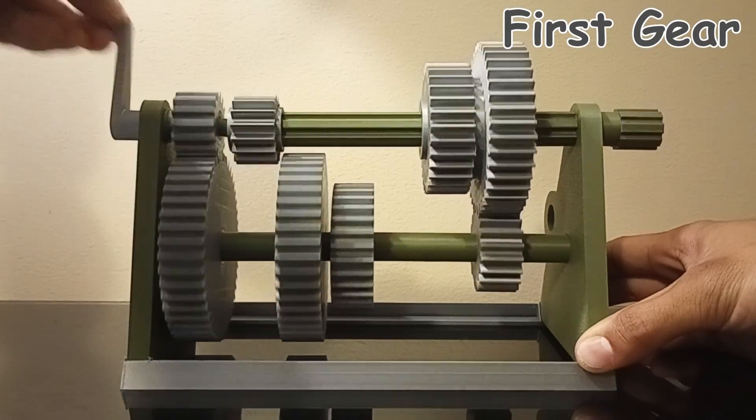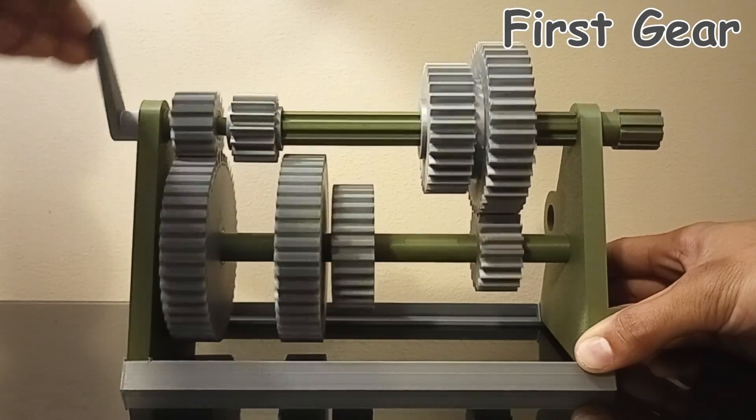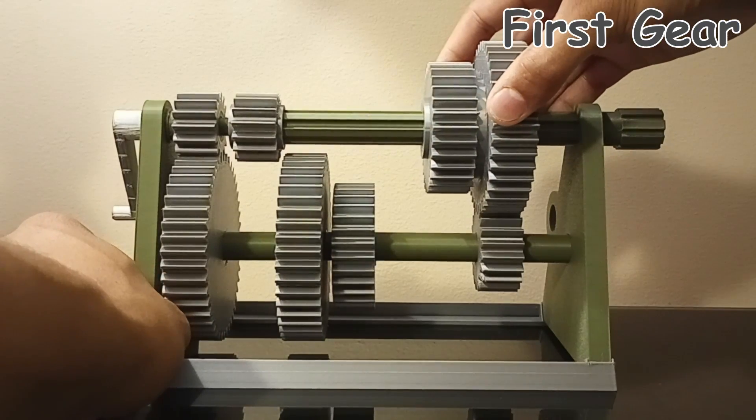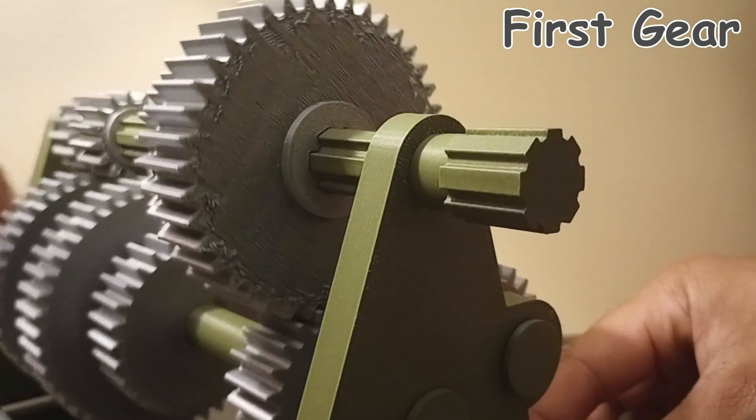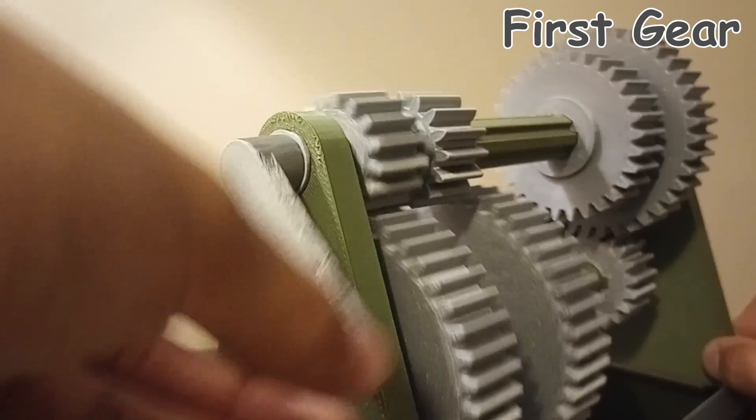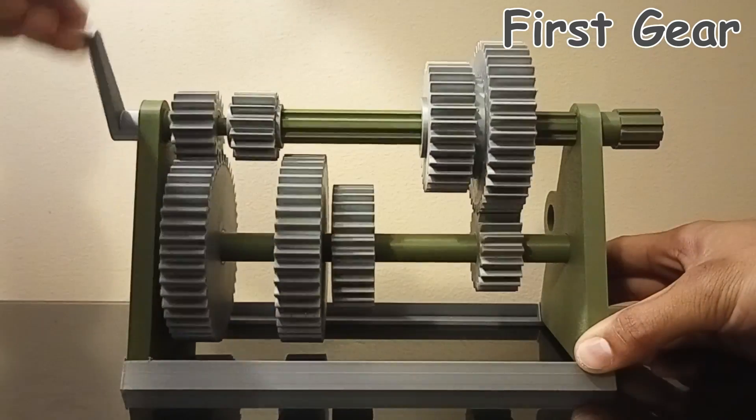First gear. In order to shift into this setting, the first gear must mesh with its respective counter gear below it. And in this setting, you may notice that the rotational output speed is a lot slower, a lot slower than the input, and as a matter of fact, this setting is the slowest.